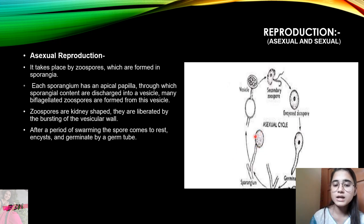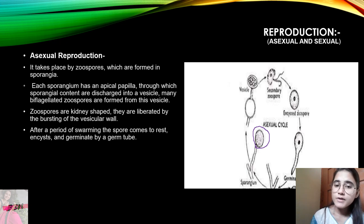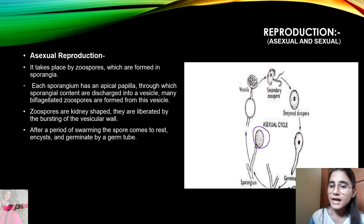Each sporangium has an apical papilla — also called the apical beak — through which the sporangial content is discharged into a vesicle. Many biflagellated zoospores are formed from this vesicle. We have also studied the apical papilla in the life cycle of Phytophthora. Through the apical papilla or apical beak, the zoospores are released.